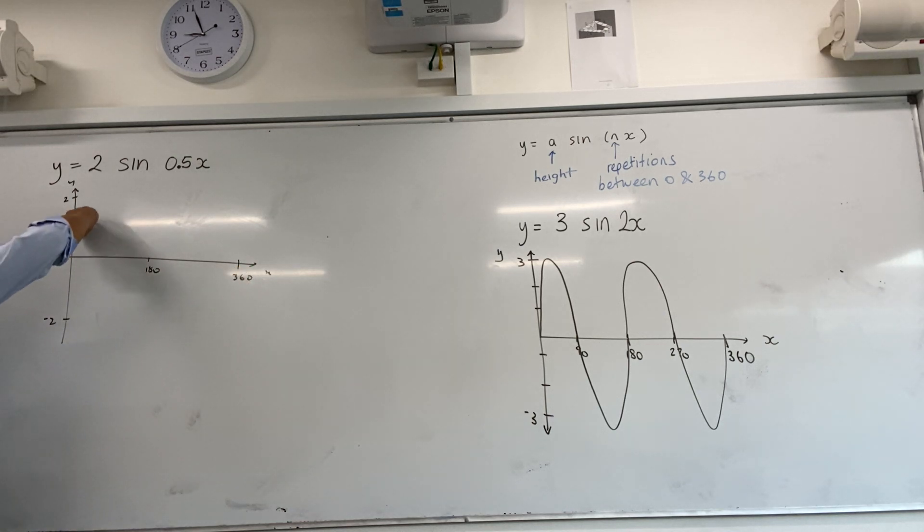Now normally what you would get, you would get one curve and then the bottom curve, right? But now you're only going to get half a repetition, so that means this is going to happen. Look, you only get half the curve because that's what this is.